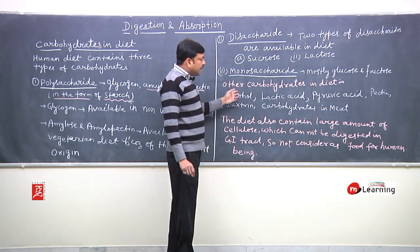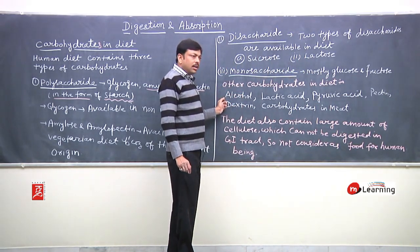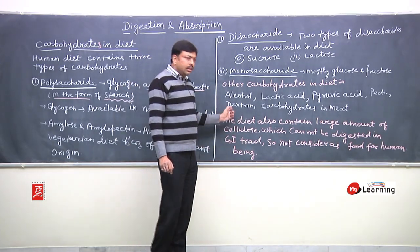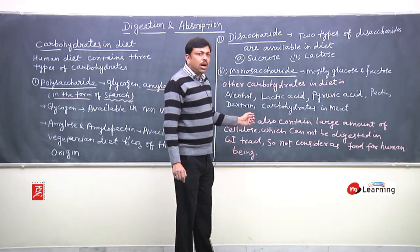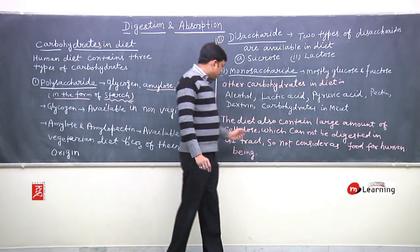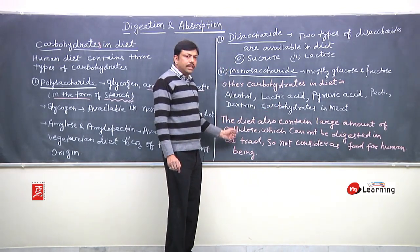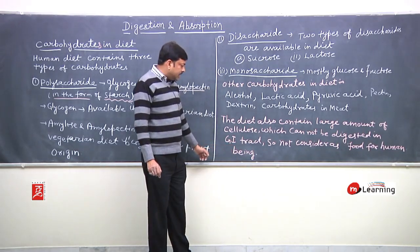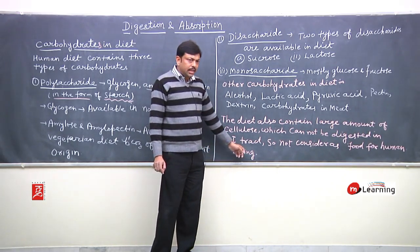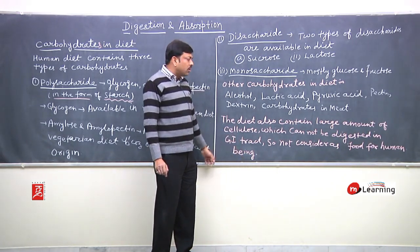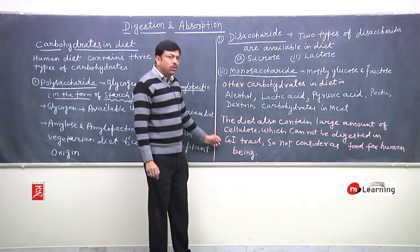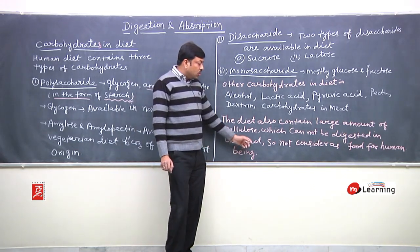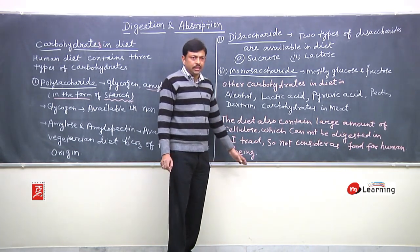Other carbohydrates in diet include alcohol, lactic acid, pyruvic acid, pectin, dextrin, and carbohydrates in meat. The diet also contains a large amount of cellulose, which cannot be digested in the gastrointestinal tract, and so is not considered as food for human beings.